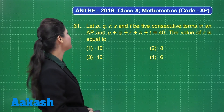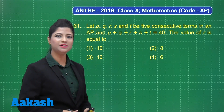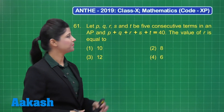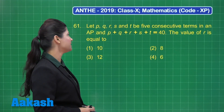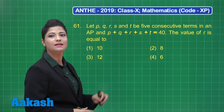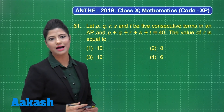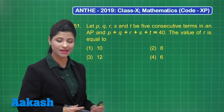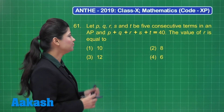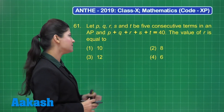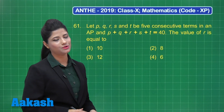Let us discuss question number 61. It states that let PQRST be 5 consecutive terms in an AP such that P plus Q plus R plus S plus T equals 40. The value of R is equal to one of the given options.